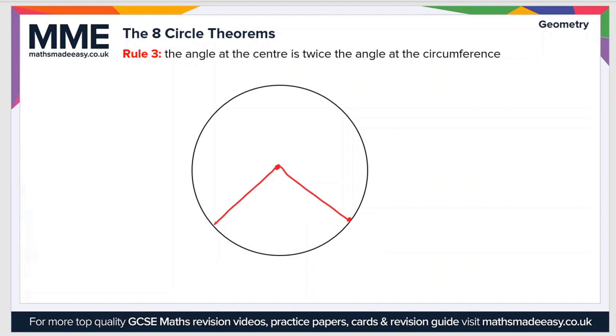Then this angle formed at the center of the circle will be twice the angle formed when the two radii are joined at a point on the circumference. So we'll call this angle x, and this angle will be 2x.